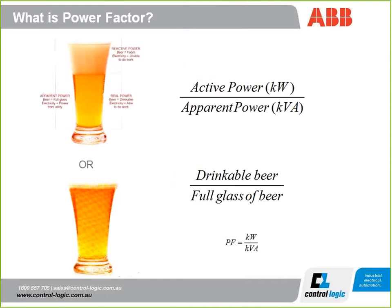Extending the analogy slightly further, the top glass has about two thirds beer and about a third foam — we'd say this has a poor power factor because there's still a lot of foam. To calculate the power factor, we take the active power in kilowatts and divide it by the apparent power in KVA. Using the beer glass analogy, you take your drinkable beer and divide that by the full glass to get your power factor. The bottom glass, with virtually no foam, represents a power factor close to unity — it's all useful power.